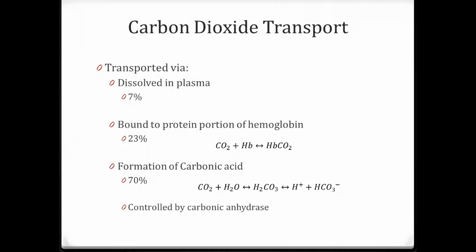Carbon dioxide can be transported in a number of different ways. One, it can be dissolved in the plasma — not much, about 7% is transported that way. It can also be bound to the protein portion of the hemoglobin; about 23% is carried that way. You can see in the equation that CO2 combines with hemoglobin to form carbaminohemoglobin.